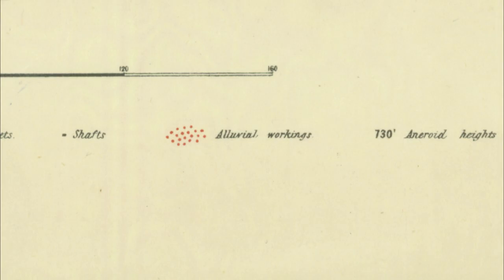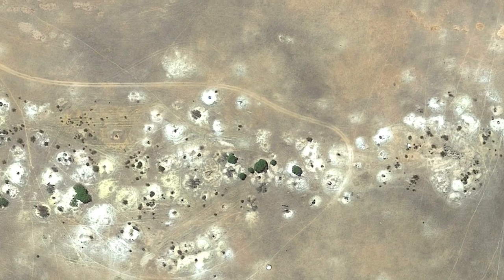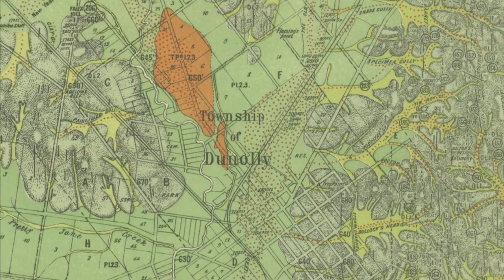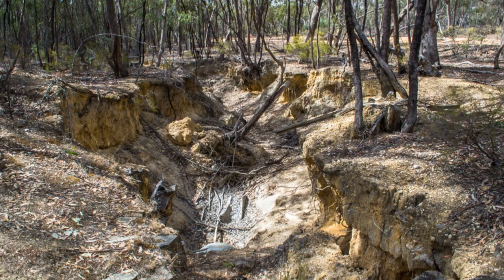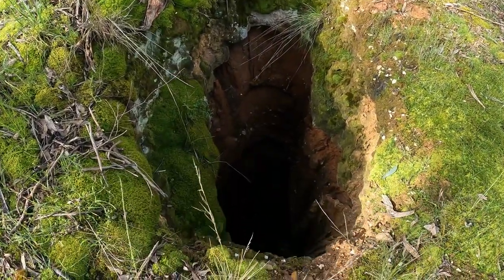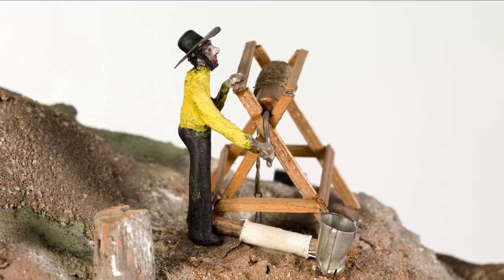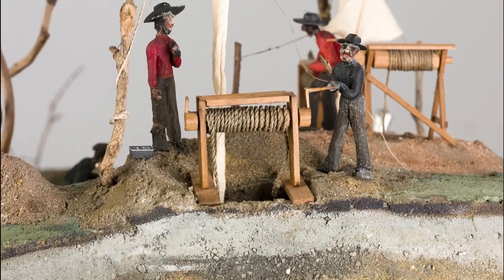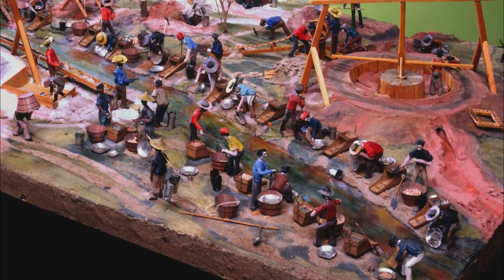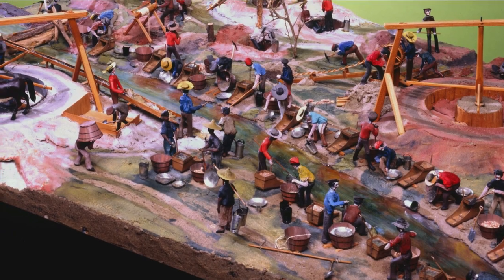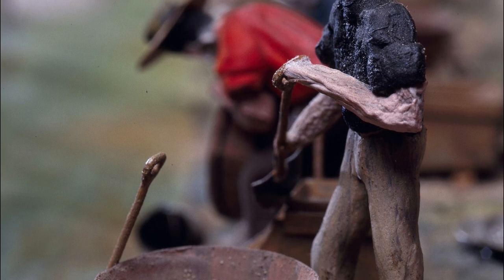Diggings, gold workings, and alluvial workings all refer to areas where alluvial mining has occurred. It is often marked on maps by dotted areas, and includes surfacing, creek workings, and sinking shallow shafts to reach buried leads. Men typically worked these alluvial areas alone or with a mate, or formed small companies with a few others. These were the diggings which brought people from all over the world, where any man could potentially strike it rich from their own labour, regardless of his previous position in life.